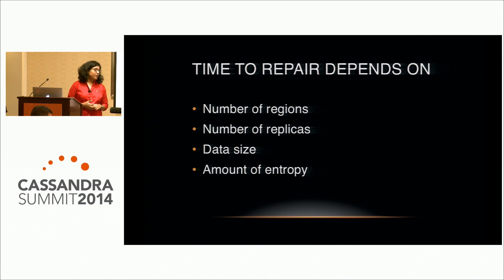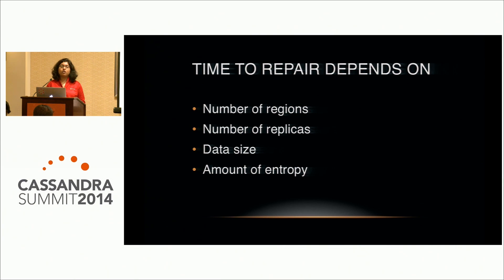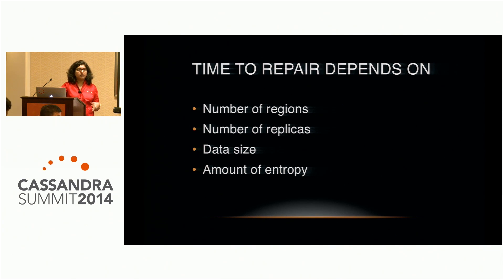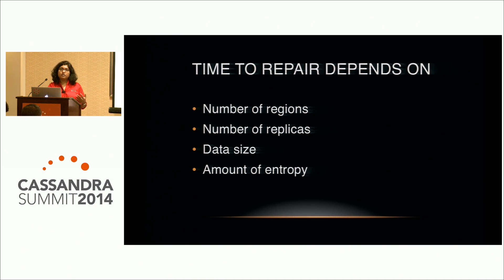V-nodes have not been tested yet for this use case. Time to repair depends on the number of regions — some clusters extend to four regions, giving 12 replicas total, which increases repair time. We use three replicas per region in Amazon to survive zone outages. Repair time also depends on data size, and more importantly on entropy — if you are changing data frequently, time to repair increases.